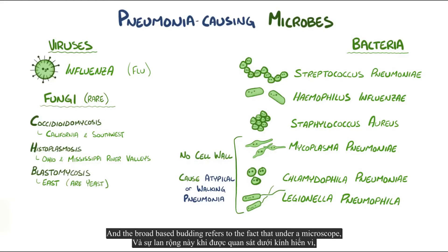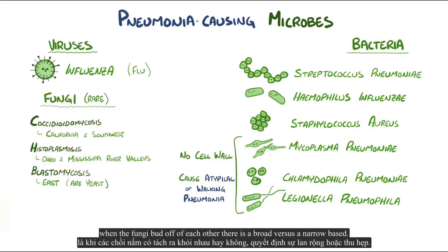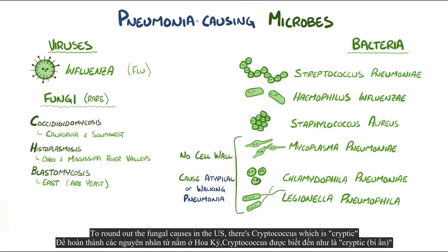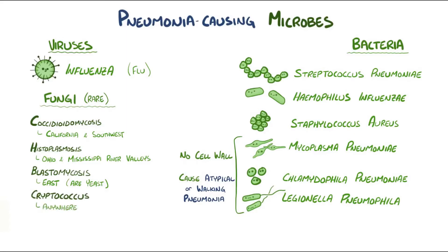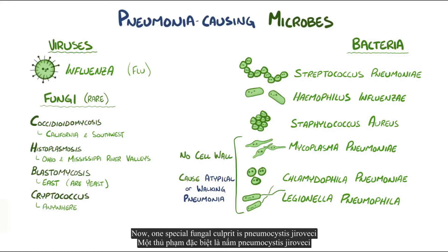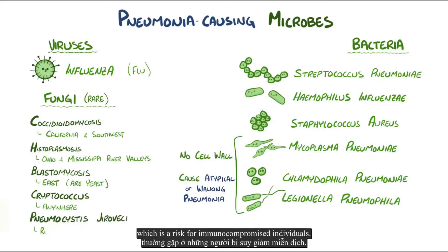The broad-based budding refers to the fact that under a microscope, when the fungi bud off each other, there's a broad versus a narrow base. To round out the fungal causes in the US, there's Cryptococcus, which is cryptic because geographically it can pop up really anywhere. One special fungal culprit is Pneumocystis jirovecii, which is a risk for immunocompromised individuals.